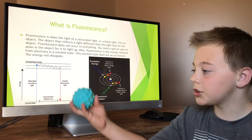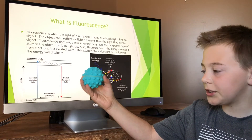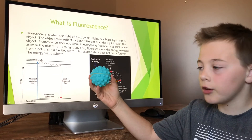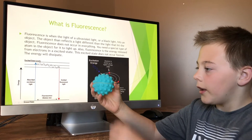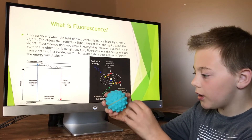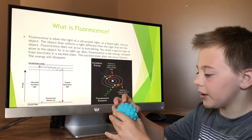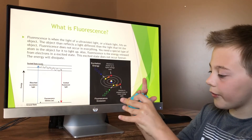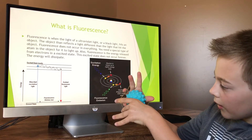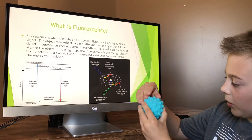A good visual to show the high energy state of the electrons is this. This ball represents the nucleus and this rubber band represents the orbit of the electrons. When the electrons are in a higher energy state, they go out of their regular orbit like this, and then they go back down to their normal energy state.